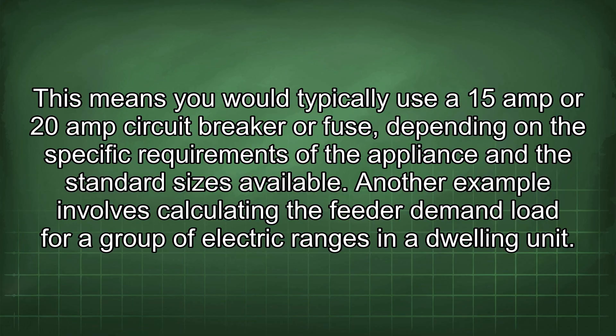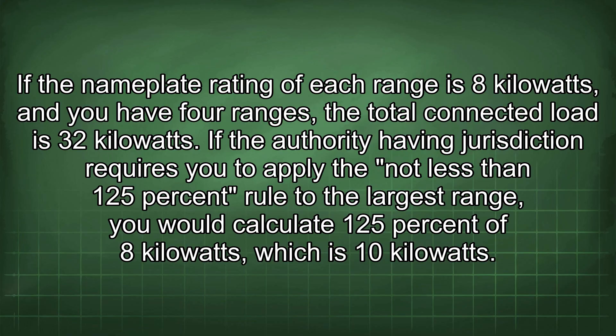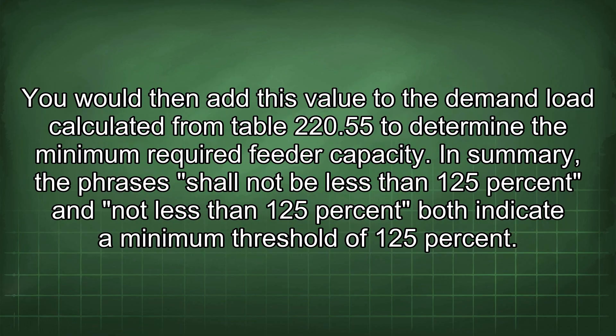This means you would typically use a 15 amp or 20 amp circuit breaker or fuse, depending on the specific requirements and standard sizes available. Another example involves calculating the feeder demand load for a group of electric ranges in a dwelling unit. The NEC provides tables such as table 220.55 that allow you to apply demand factors to the total connected load. If the nameplate rating of each range is 8 kW and you have 4 ranges, the total connected load is 32 kW. If required to apply the not-less-than-125% rule to the largest range, calculate 125% of 8 kW = 10 kW, then add this to the demand load from table 220.55 to determine the minimum required feeder capacity.